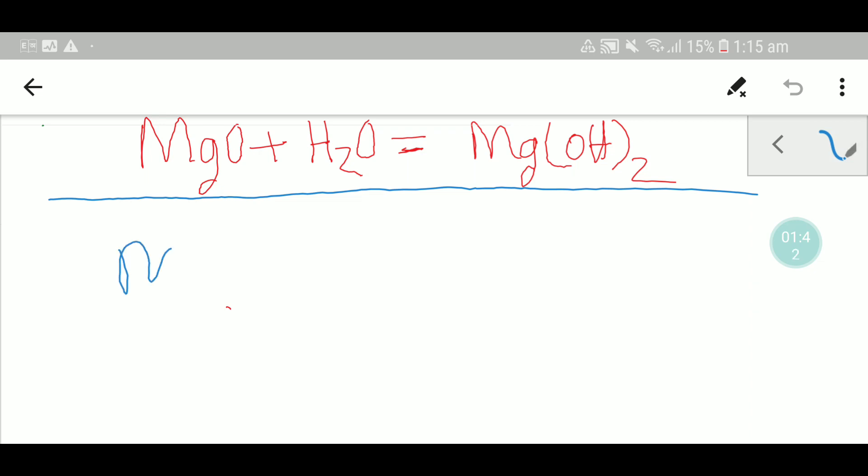So what I will do, this is magnesium oxide, right? Two plus, two minus. And we can write water like this, HOH, right? HOH.